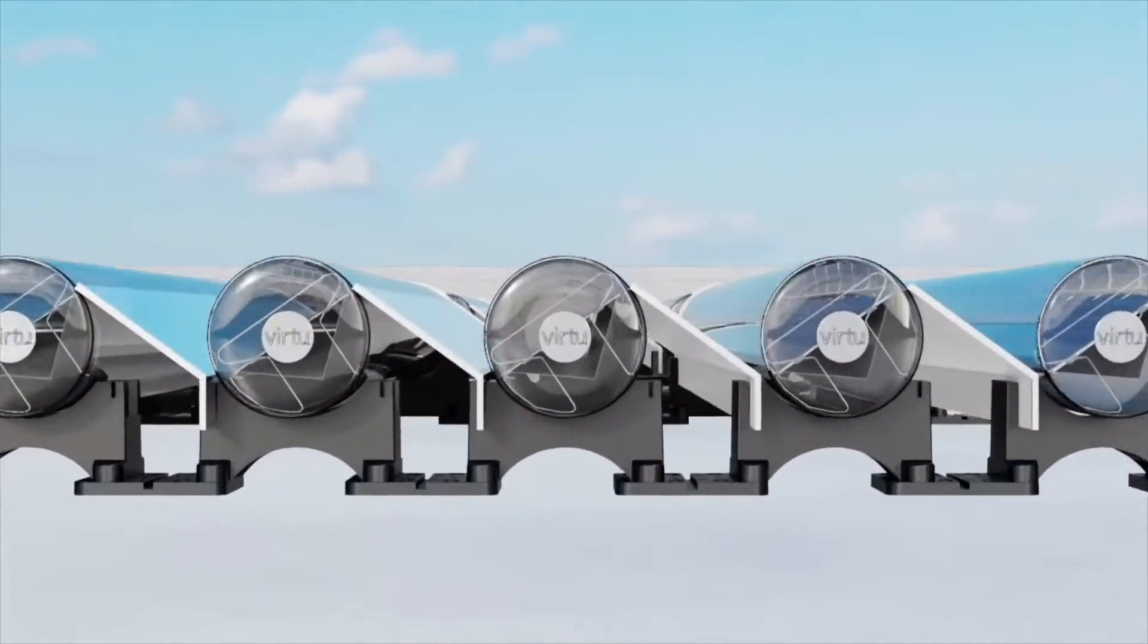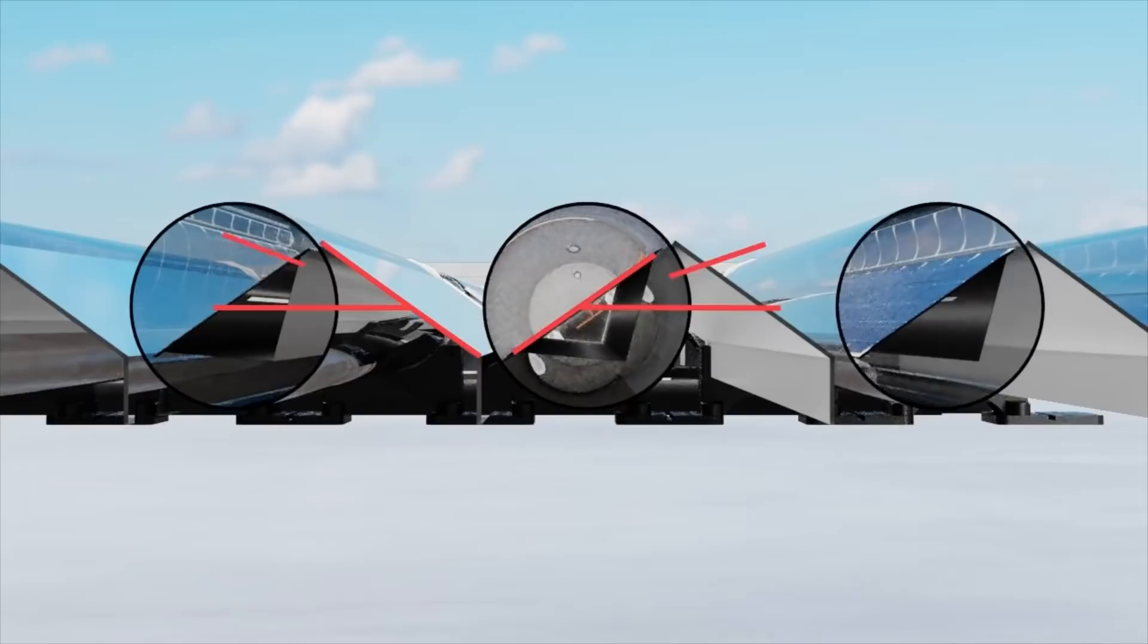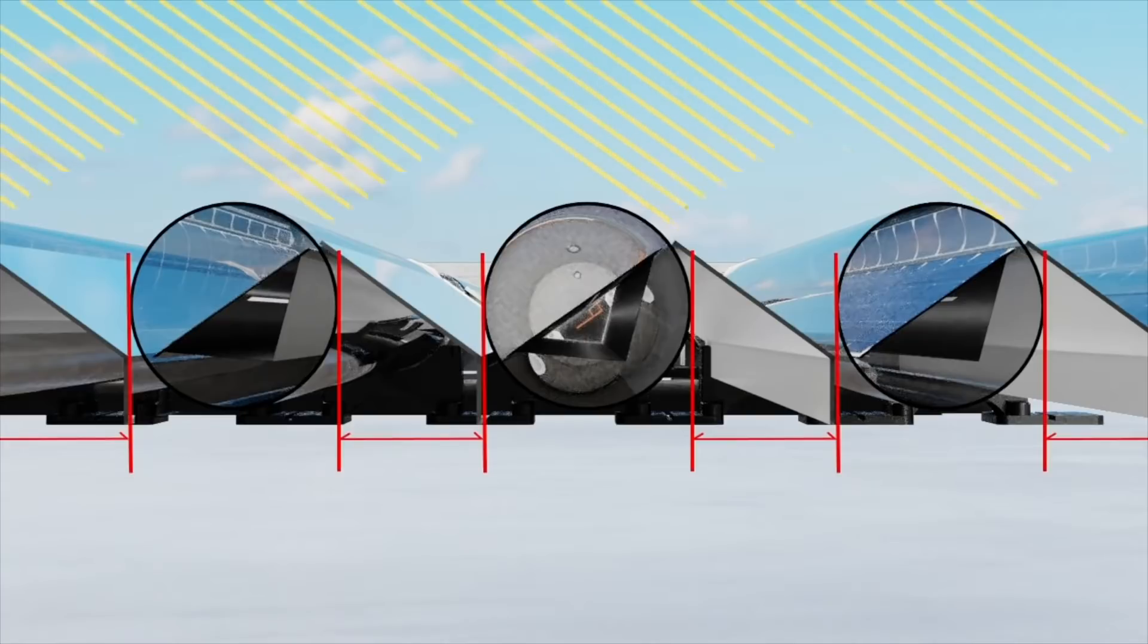To ensure optimal performance at a given latitude, each tube is angled towards the sun and spaced accordingly to avoid self-shading in the winter.